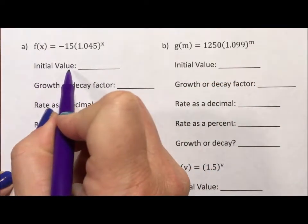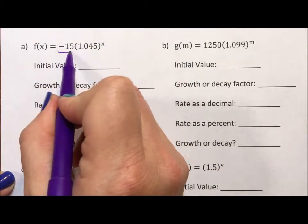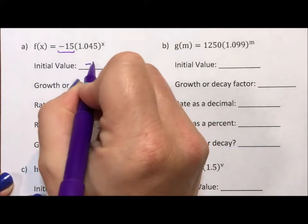So the initial value, where you start when your input is zero. Well, your initial value is the number outside the parentheses, so it's just negative 15.